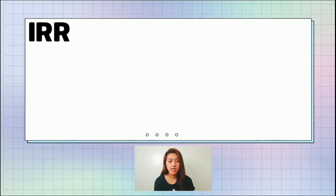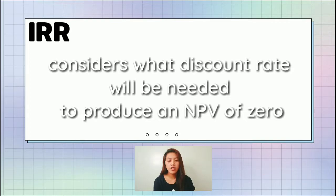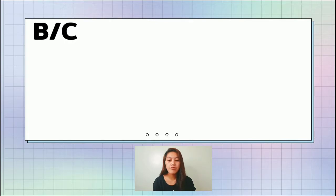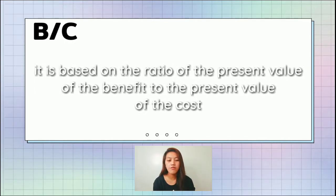The next one is the IRR. IRR considers what discount rate will be needed to produce an NPV of zero. While the benefit-cost ratio is based on the ratio of the present value of the benefits to the present value of the costs.